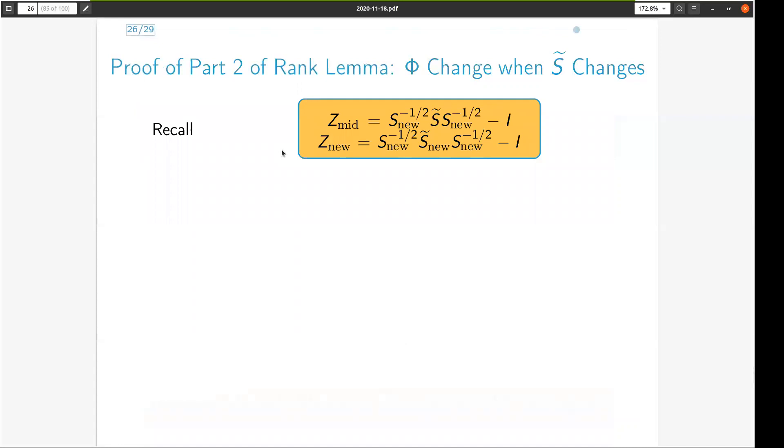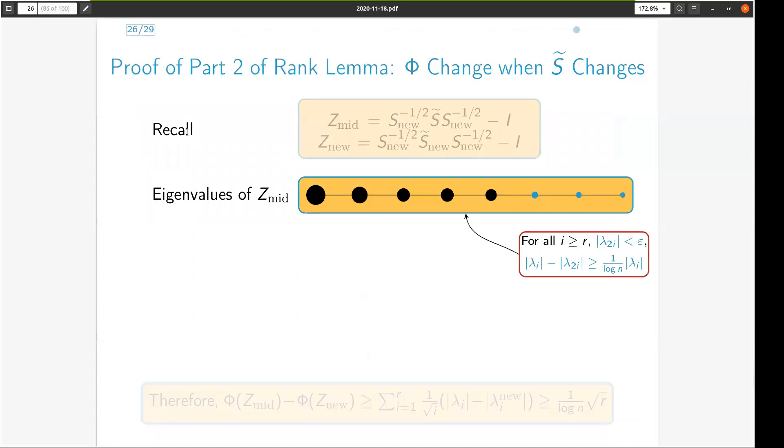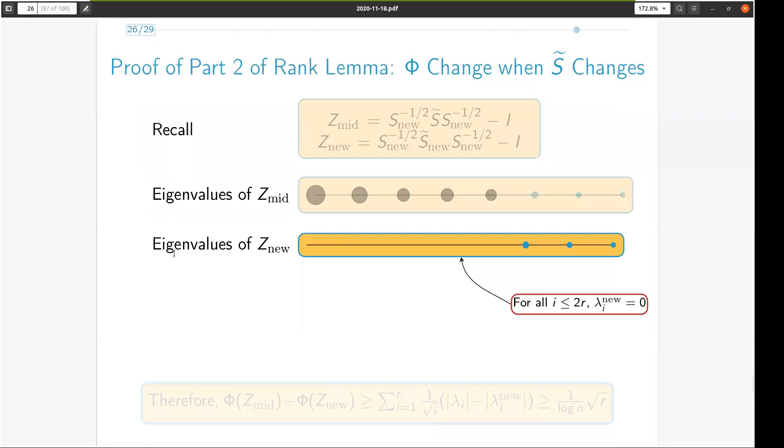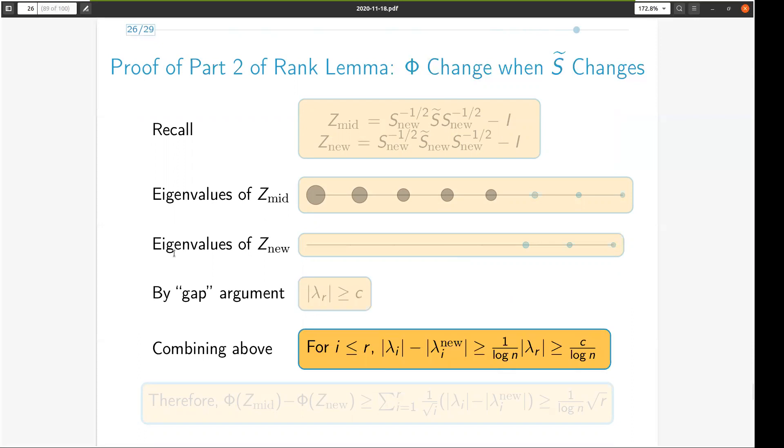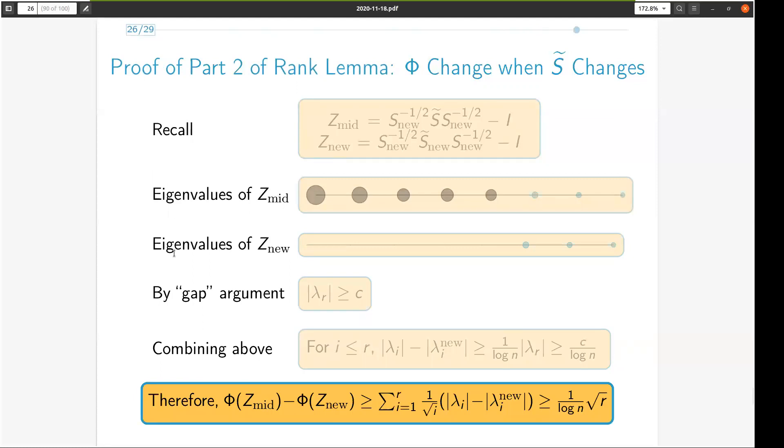To prove the potential change going from Z-mid to Z-nu, we recall this detail of the approx slack update function. That beyond the index r of the eigenvalue magnitudes arranged in decreasing order, we observe this gap. Recall further that the eigenvalues of Z-nu are obtained by zeroing out the large eigenvalues. And combining these two facts gives a lower bound on the difference in eigenvalue magnitudes, which corresponds to a lower bound on the potential change from Z-mid to Z-nu. And combining these two lemmas concludes the proof sketch of the rank lemma.